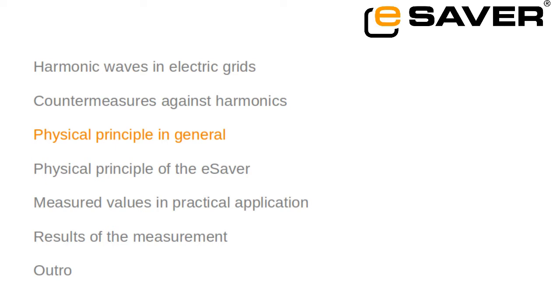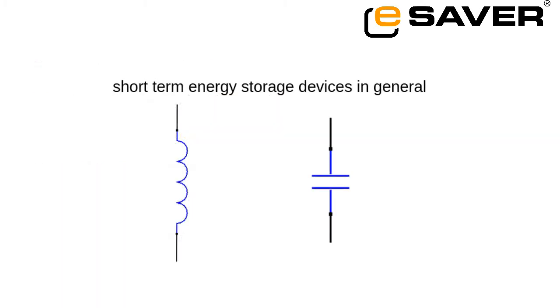So how does the eSaver gain the usable energy from the harmonic waves? It stores the energy from the harmonics at some times and releases it at other times. In general, there are two ways to store electrical energy over a short time range.